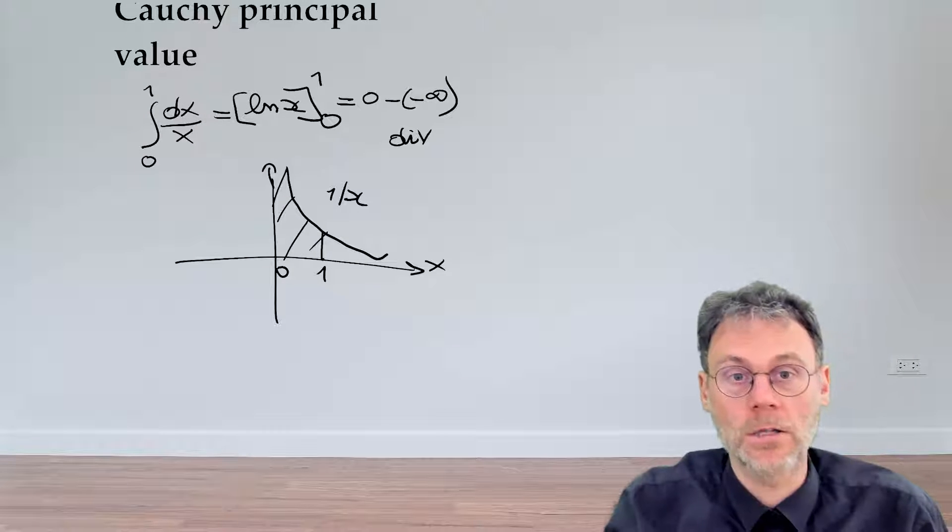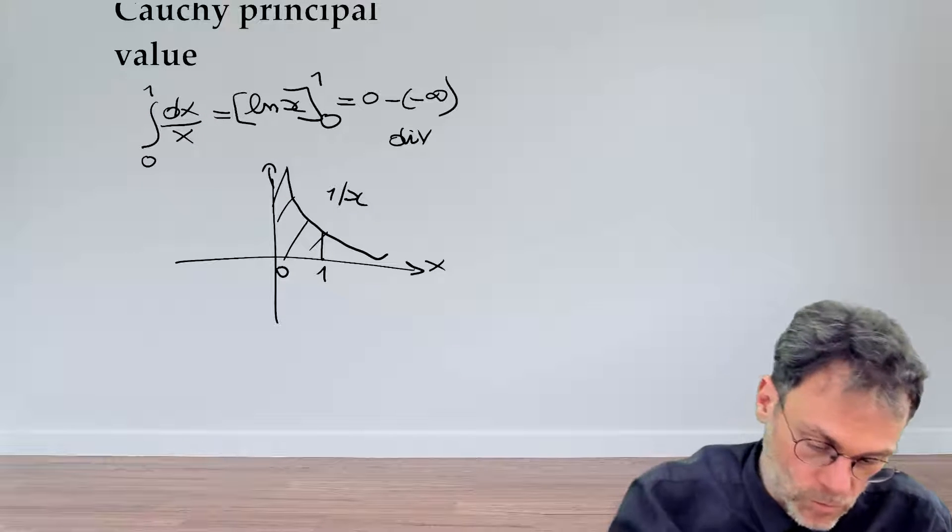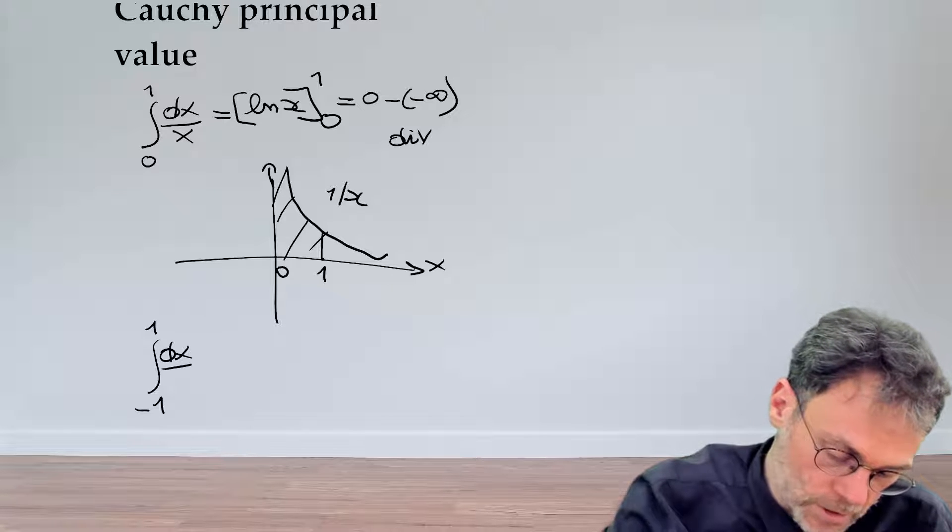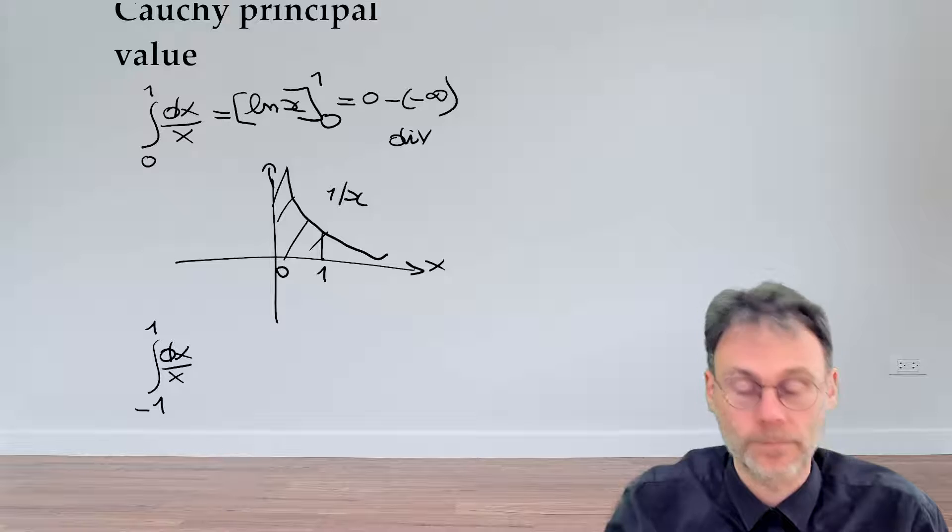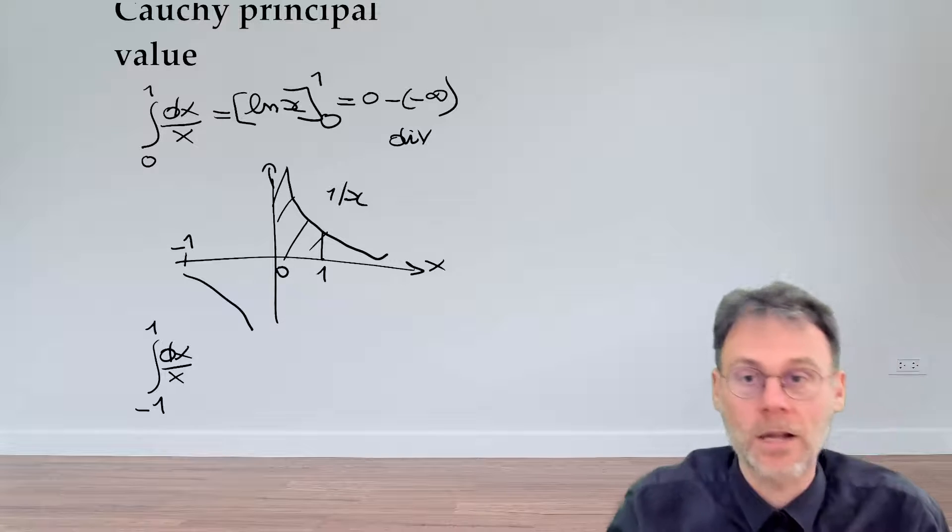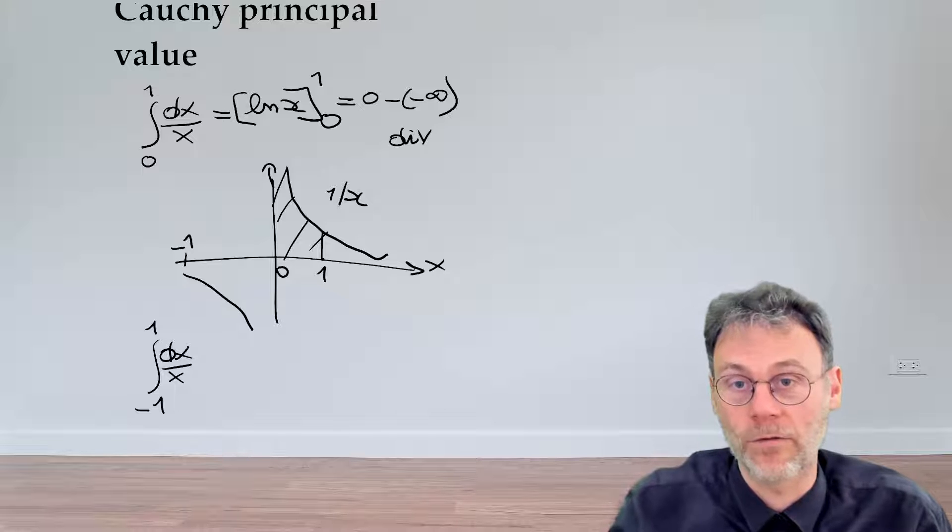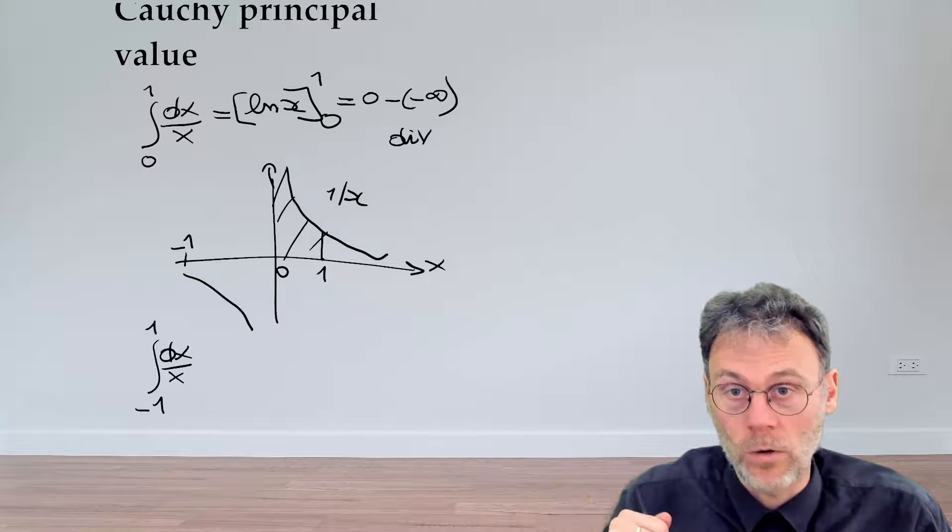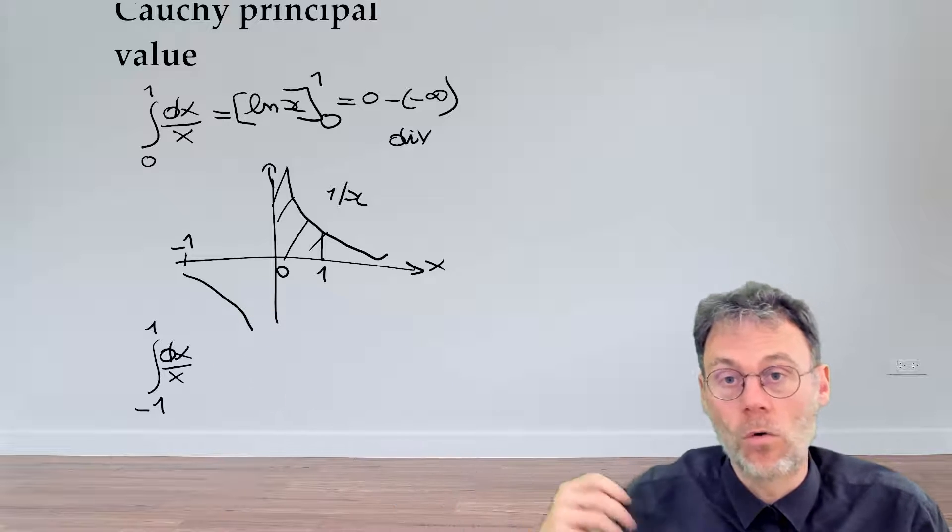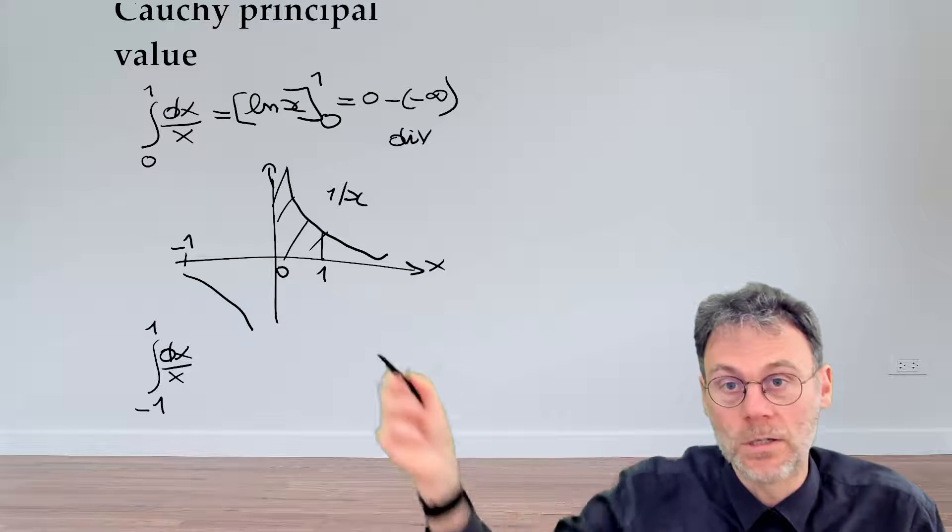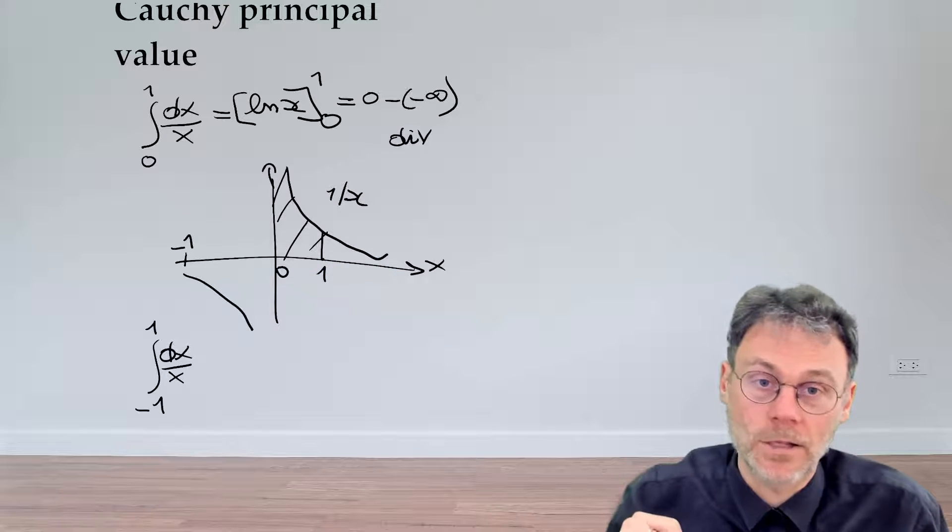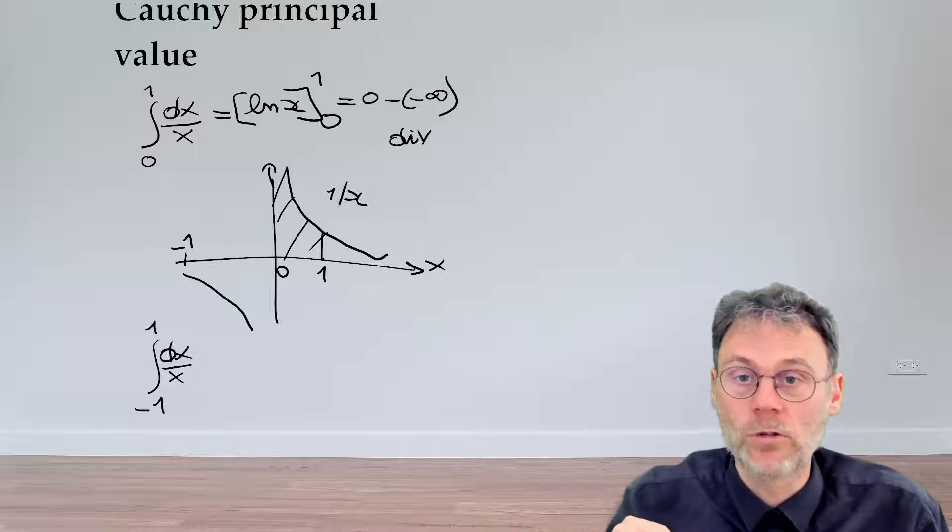Let's now ask ourselves a different question. What happens if we calculate the integral from minus 1 to 1 of dx over x? So if we go back to our diagram, we have a second branch here, a negative branch. The question is, what will we get? Will we still get a value which is undefined or will we get a value which is 0? Because you clearly see there's some symmetry going on and perhaps these things will cancel. So which one of the two is it?